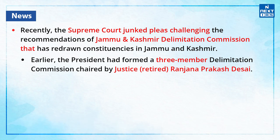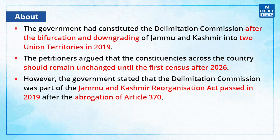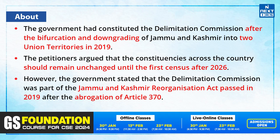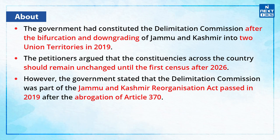Earlier, the President had formed a three-member delimitation commission chaired by Justice Retired Ranjana Prakash Desai. The government had constituted the delimitation commission after the bifurcation and downgrading of Jammu and Kashmir into two union territories in 2019. The petitioners argued that the constituencies across the country should remain unchanged until the first census after 2026. However, the government stated that the delimitation commission was part of the Jammu and Kashmir Reorganisation Act passed in 2019 after the abrogation of Article 370.